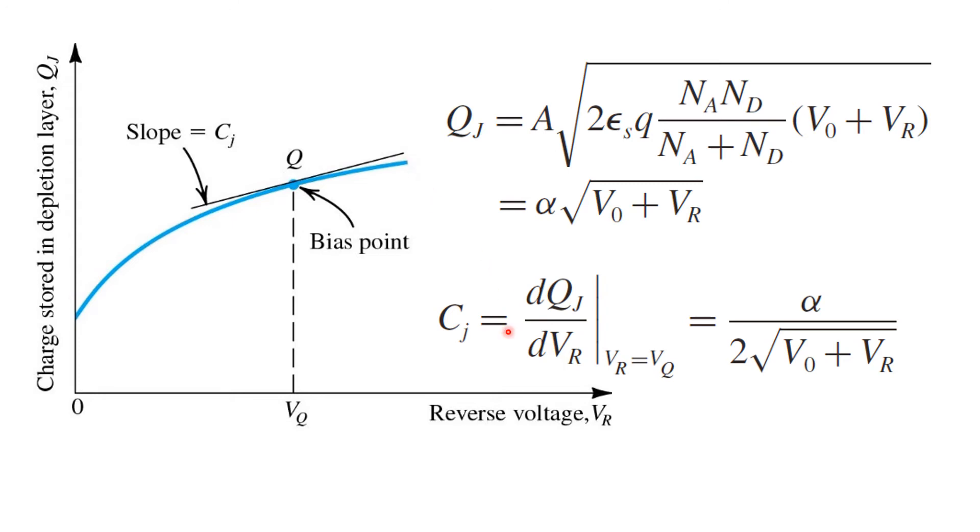So what we can say is that the capacitance at a given reverse bias voltage, Vr, let's say one equal to this particular quiescent bias point, Vq, is given by the local slope of this curve here.